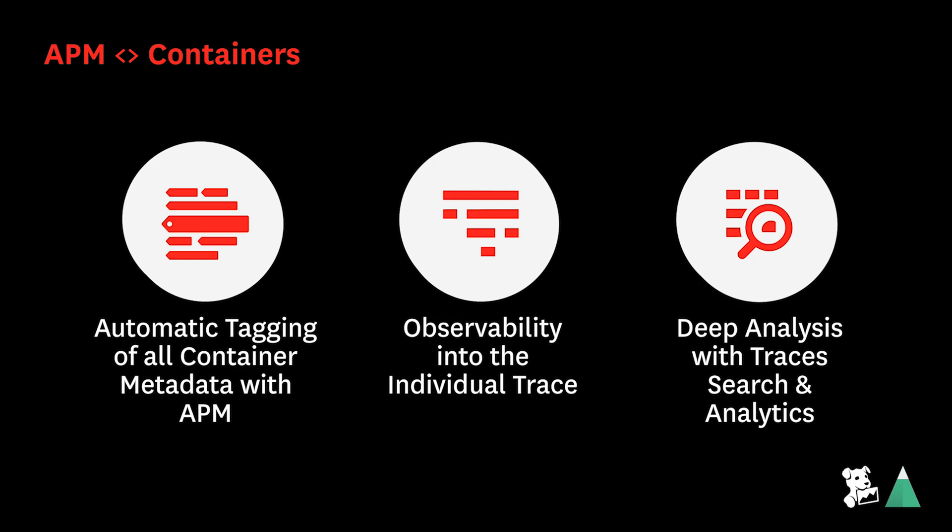Today we're happy to announce that we're pairing our deep view of containerized environments with the power of APM that already allows you to easily detect and investigate performance issues. And we're offering this out-of-the-box, no configuration needed. Automatic tagging of all container metadata with APM means that the Datadog agent automatically tags each APM tracer event with container and orchestration metadata. Observability into the individual trace allows you to track an individual request and every container, pod, deployment, and namespace it passes through. You can see all the relevant metrics for the container on the trace itself and immediately correlate latency and errors to identify root cause. Deep analysis with trace search and analytics gives you the power to slice and dice your traces based on all container tags out-of-the-box. You can easily create dashboard widgets and monitors based on throughput, latency, and error rates and alert on a deployment, replica set, or even a single container that you're interested in.